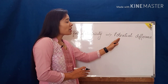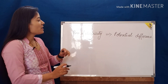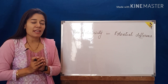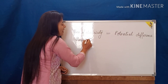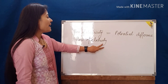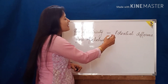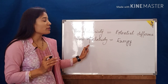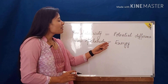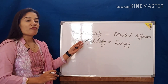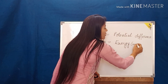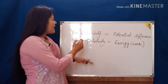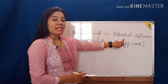More the potential difference, more the flow of electricity. So the flow of electricity is proportional to potential difference. For the flow of electricity, energy is also important. More energy invested on the electrons, the more flow of electricity there will be. More work done on electrons, the more flow of electricity. So flow of electricity is proportional to both potential difference and energy, meaning potential difference is equal to energy or work done.